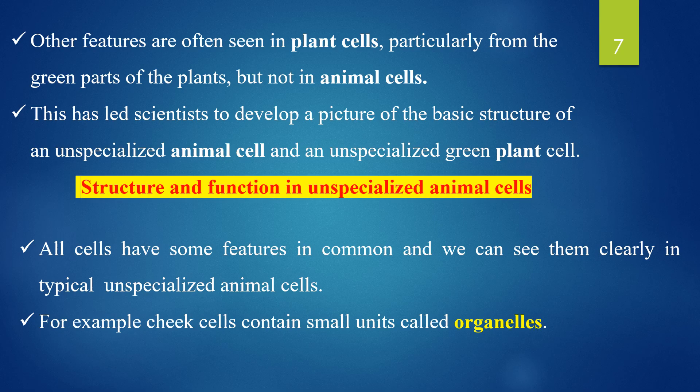Here is a feature you can see in green plants which is not found in animals — chloroplasts. Animals do not have cell walls. This has led scientists to develop a picture of basic structures of unspecialized animal cells and unspecialized green plant cells. Each cell contains small units called organelles.